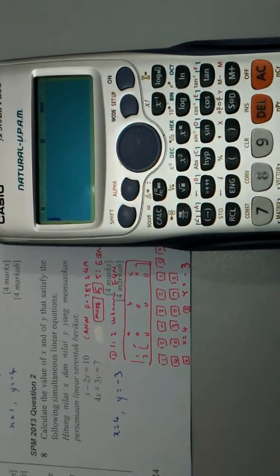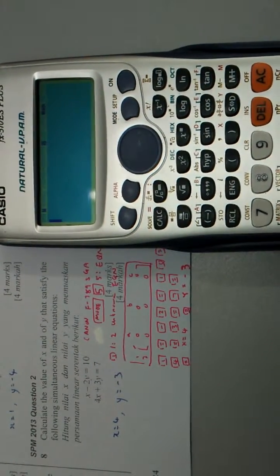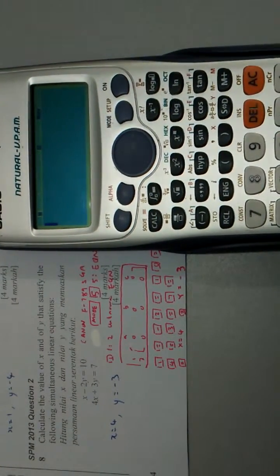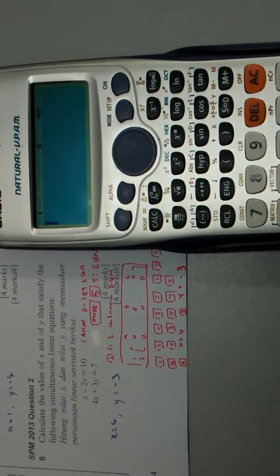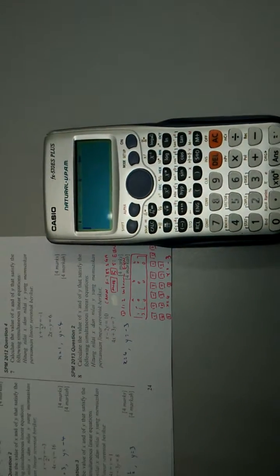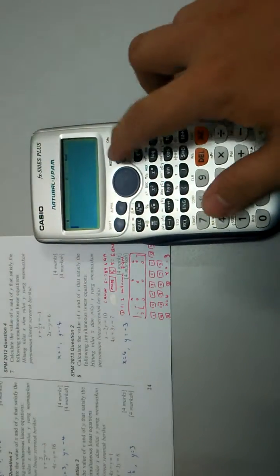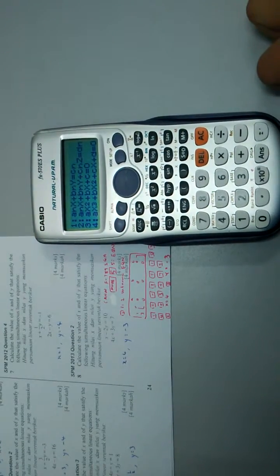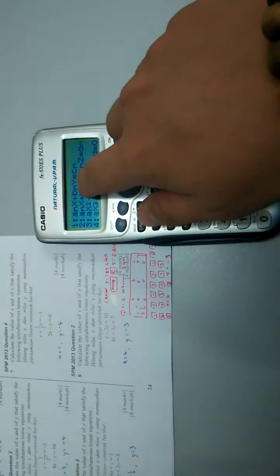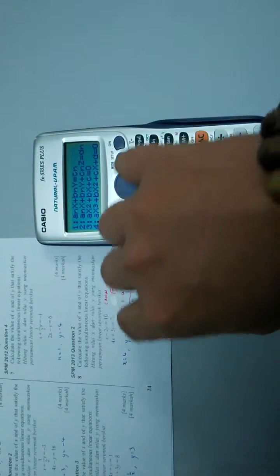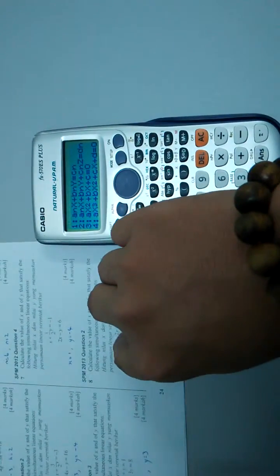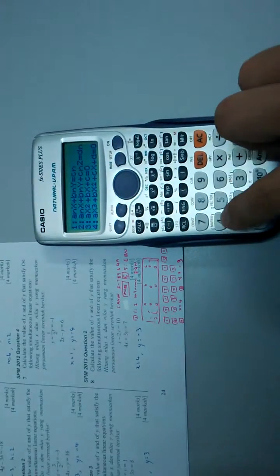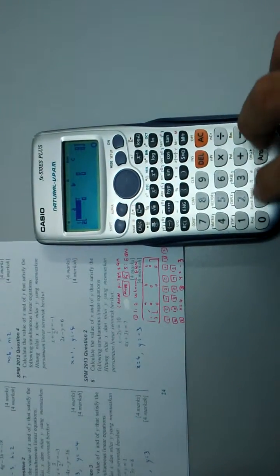In this video I will show you how to use a special scientific calculator to solve for simultaneous linear equations. First we key in, we choose mode and number 5 for equation. And this is the a_n x plus b_n x equal to c_n, so this is a_n matrix, b_n and c_n. So I choose number one.